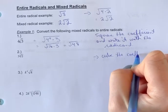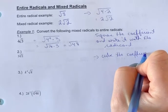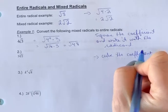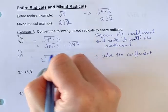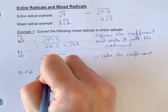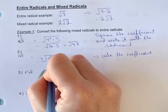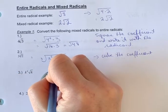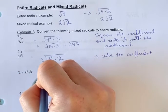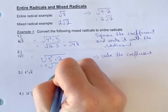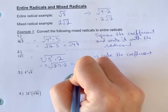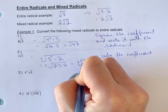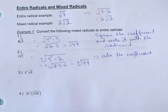When I put this underneath a cube root sign, I take the three and cube it. So it becomes 27 times two underneath the radical, giving us the cube root of 54. Don't forget to write the little index number in there.